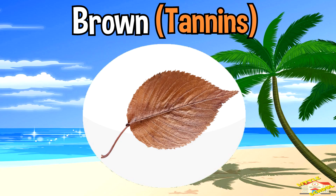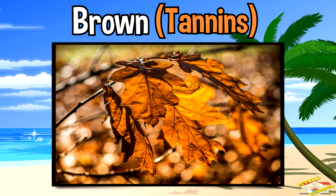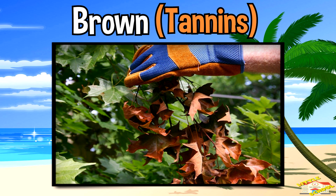Brown are tannins. When all other pigments break down, only tannins remain, which turn the leaves brown before they fall off.